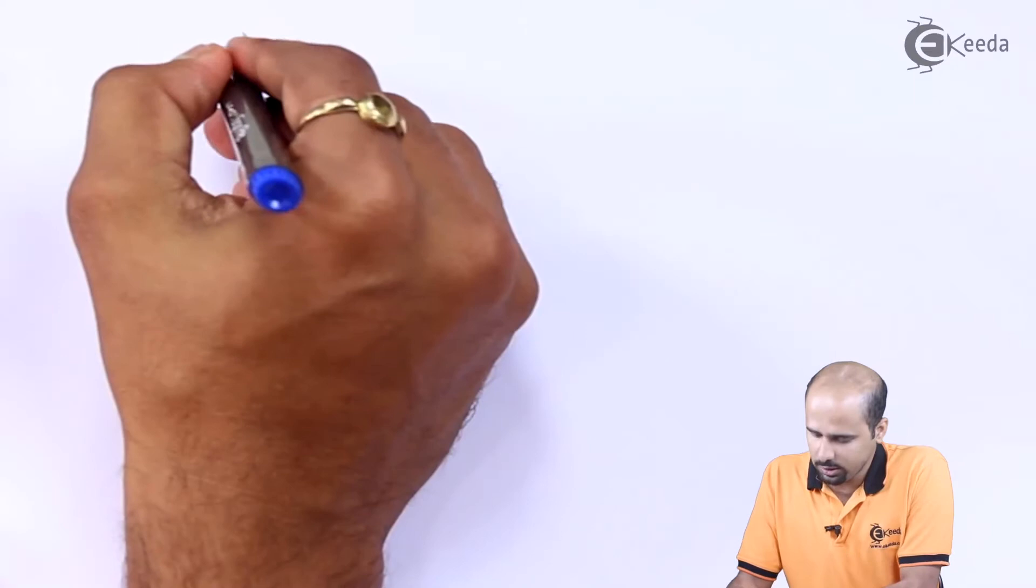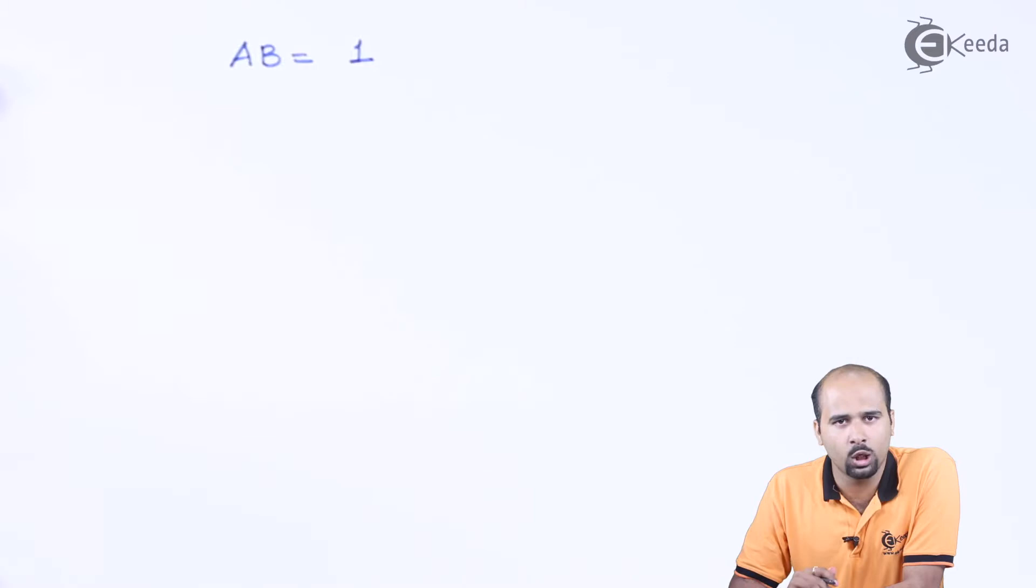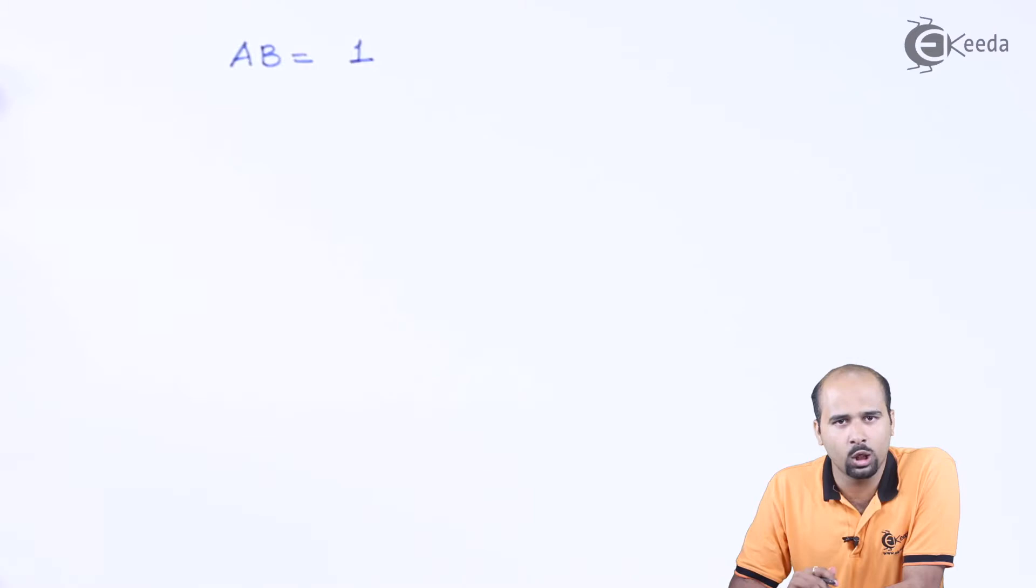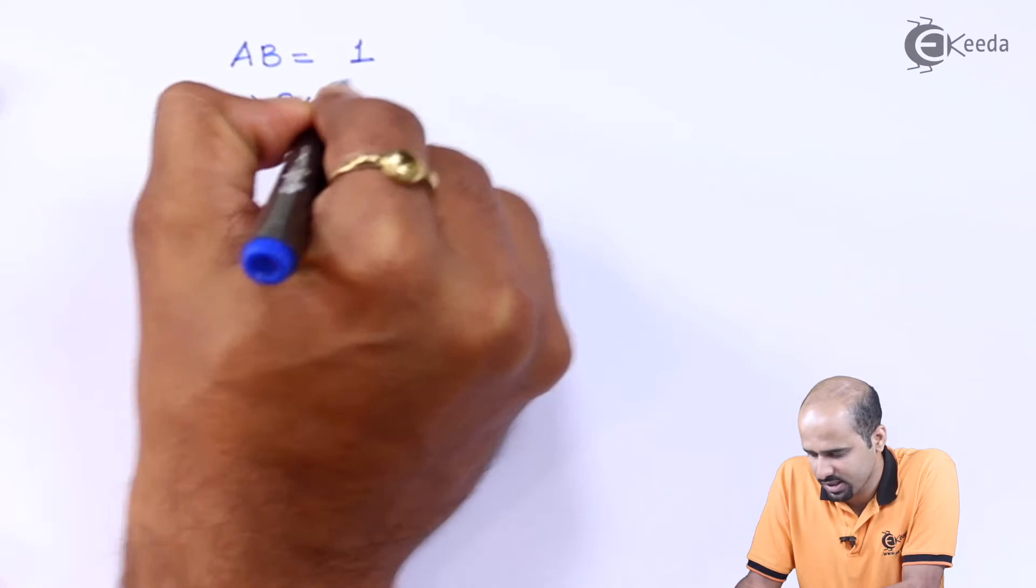So I will be getting this 1 minus AB is equal to 0. Now we will move ahead to have the mathematical expression for A and B. We will say that AB is equal to 1 now. As we all know that all the gain, all the feedback gain are nothing but the function of the frequency, either frequency or time. If it is of the function of frequency, we will take this with the s parameter.